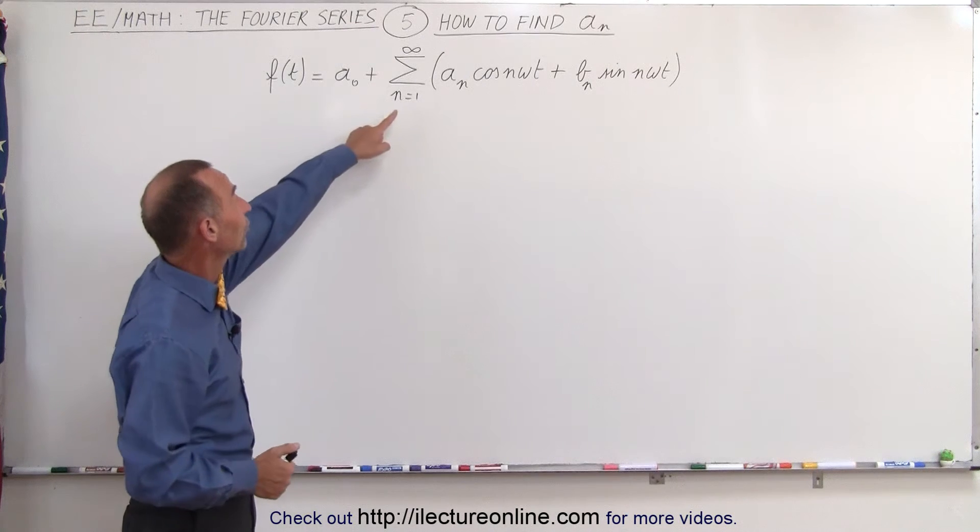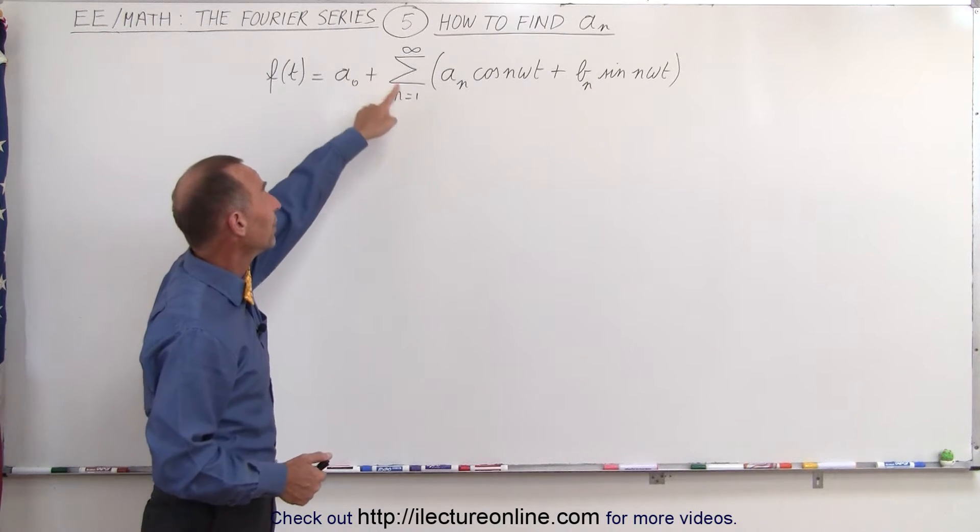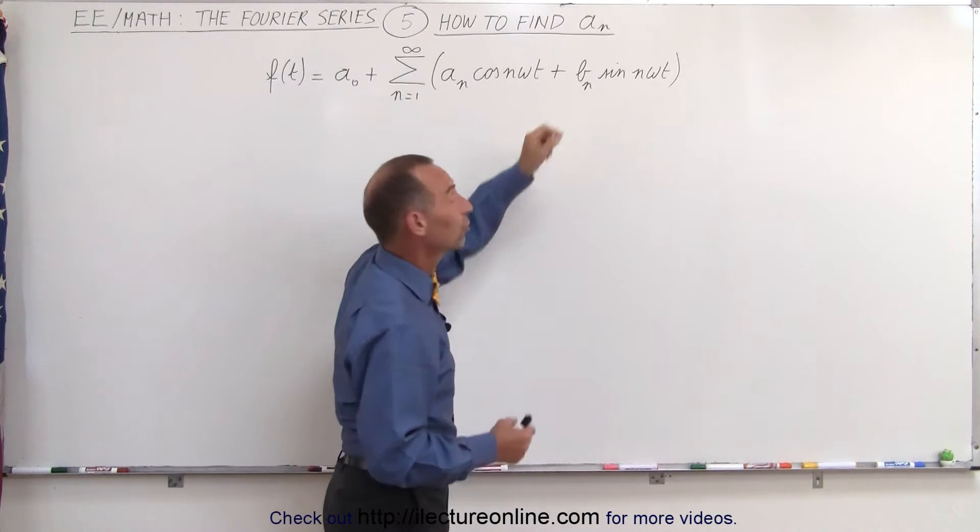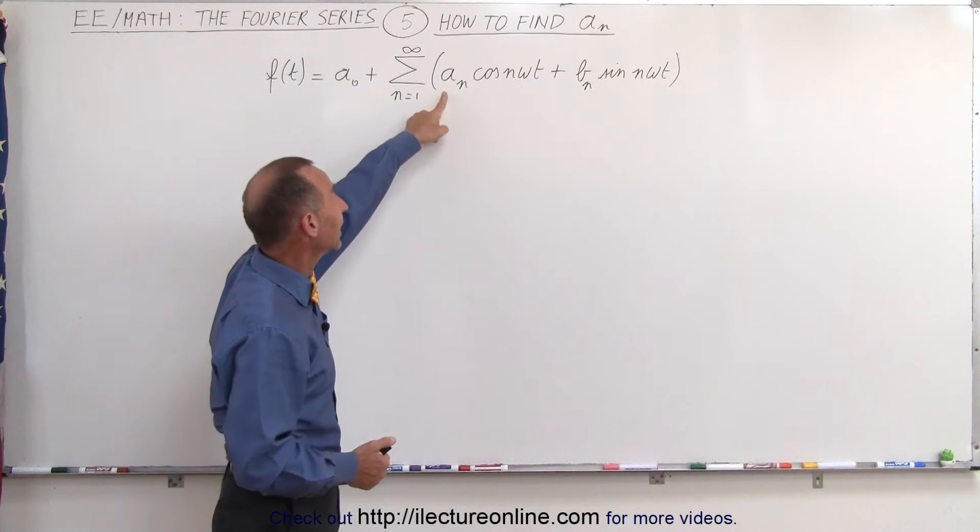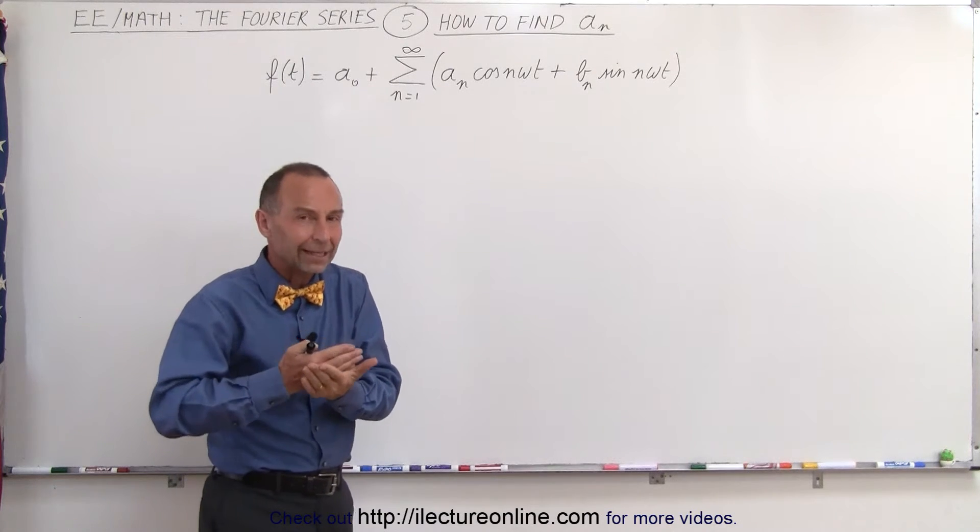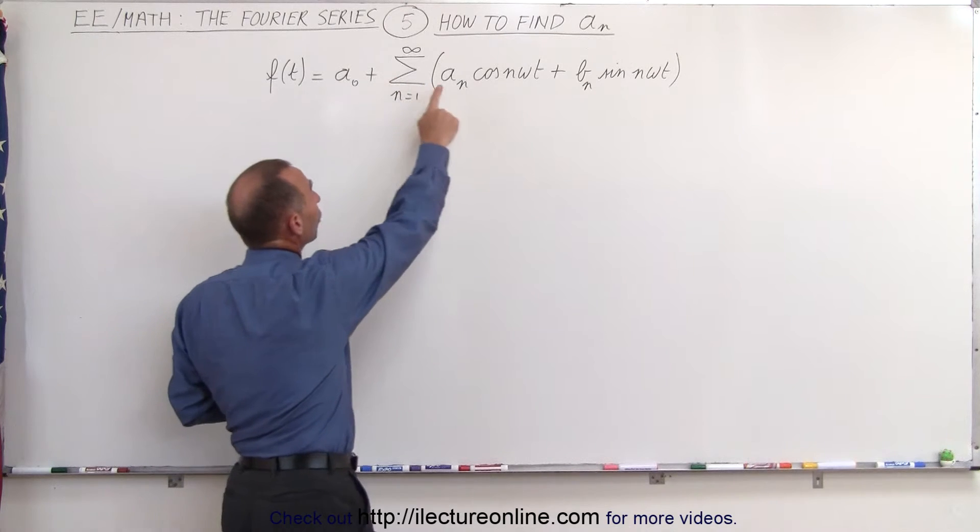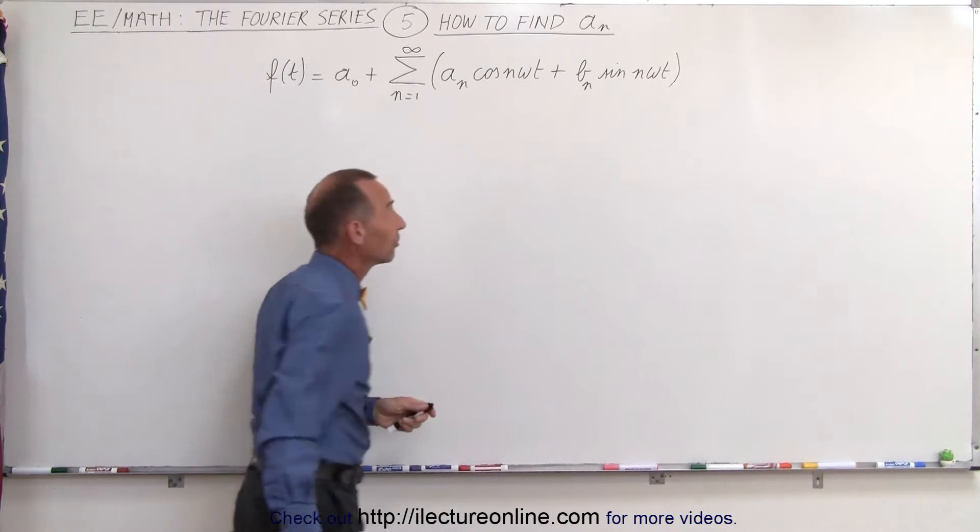Remember, in the infinite sum from n equals 1 to infinity, each term has an A sub n and a B sub n, so here we're going to learn how to calculate these A sub n's. After all, when you try to calculate the Fourier series, it all comes down to finding the A sub nought, all the A sub n's, and all the B sub n's.